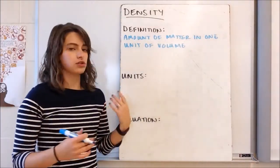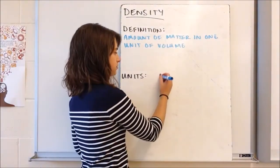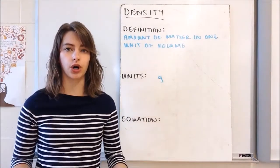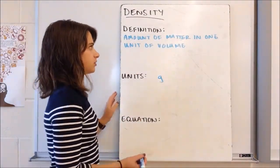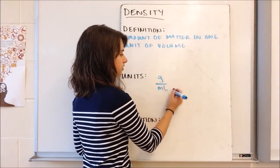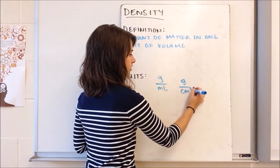Let's talk about the units. The amount of matter, or the mass, we measure in grams. It's always going to be grams per a volume unit. Our common volume units that we're going to use, especially when we're working with density, are grams per milliliter and grams per centimeter cubed.